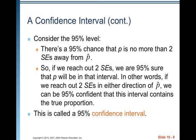So if we reach out two standard errors away from p-hat, we are 95% sure that p will be in that interval. In other words, if we reach out two standard errors in either direction of p-hat, we can be 95% confident that the interval contains the true proportion. This is called a 95% confidence interval.